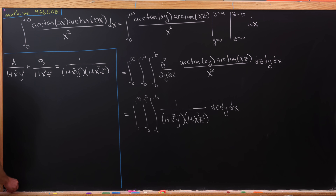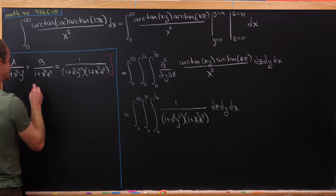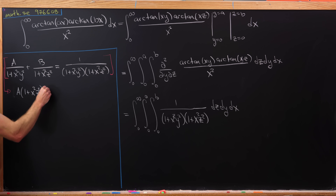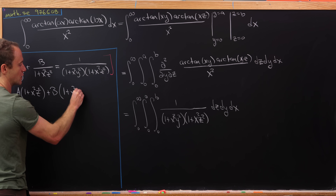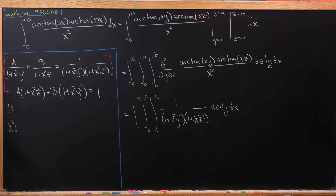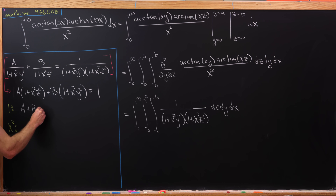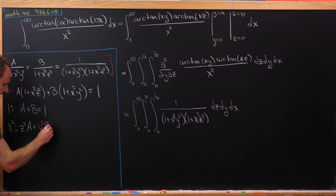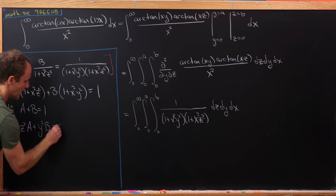We'll multiply through by the denominator to clear all denominators, leaving us with: a times (1 plus x squared z squared) plus b times (1 plus x squared y squared) equals 1. Extracting the constant term gives a plus b equals 1, and extracting the coefficient of x squared gives z squared times a plus y squared times b equals 0, since there's no x squared term on the right-hand side.